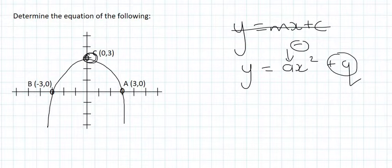So let's get started. So the first thing we can see is that this graph has moved 3 units upwards. And so q's value straight away can be made into 3.